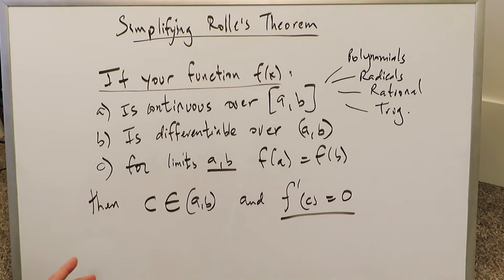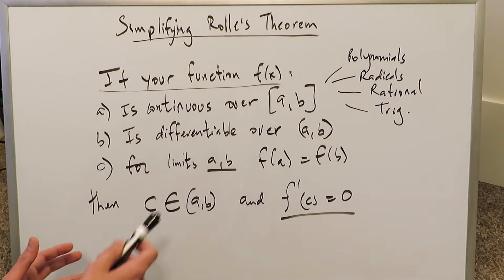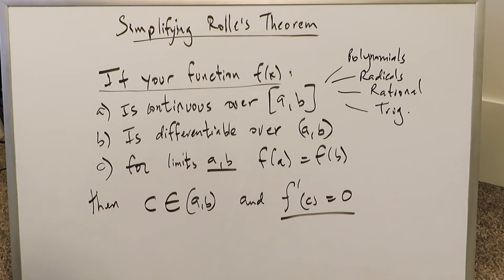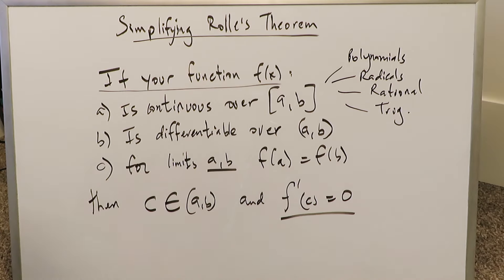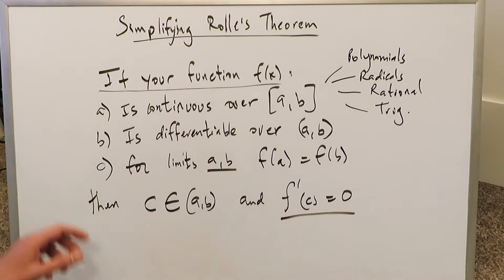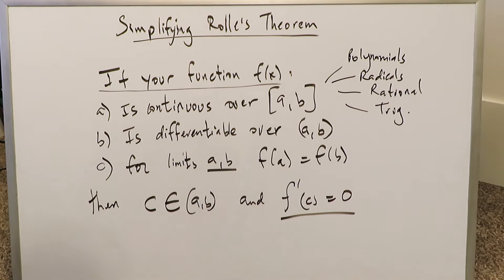Rolle's Theorem falls into the topic of mean value theorems. It's like an existence theorem which tells you that for any function you're looking at, there might be a number within the interval of that function which has a very special property. You want to be looking at a closed interval [a, b], not minus infinity to infinity, as that exceeds the bounds of most functions.